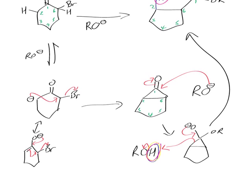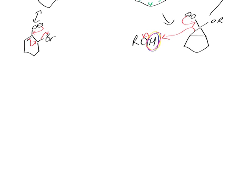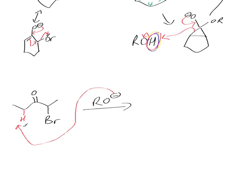Let's quickly do the same mechanism, but this time we won't use a six-membered ring — we'll just have a look at a normal linear ketone. Put the bromine there. So RO minus is going to come in and pick that up, forming the enolate. That then comes back in there like that and forms the cyclopropanone.